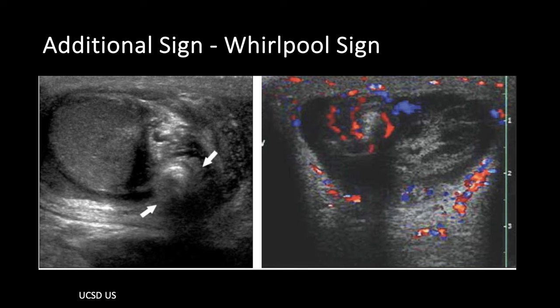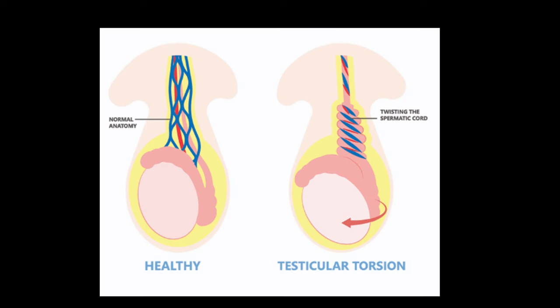Another sign to look for is the whirlpool sign — also called 'circling the drain' — which represents twisting of the spermatic cord and its vessels. With color Doppler it looks like a whirlpool; even on grayscale the twisted vessels have that characteristic appearance. This sign directly reflects the torsed anatomy of the arteries and veins within the spermatic cord.